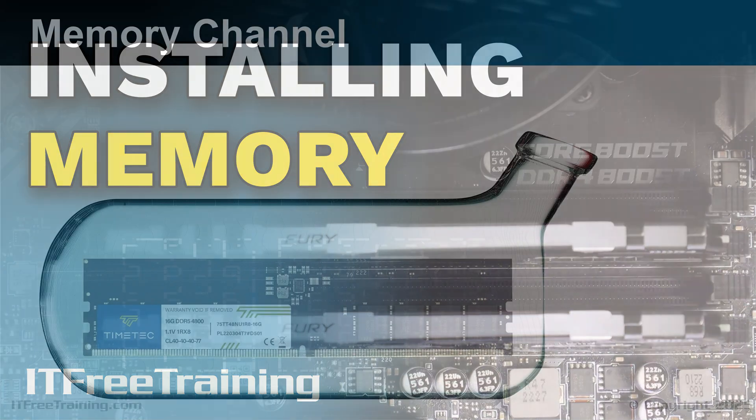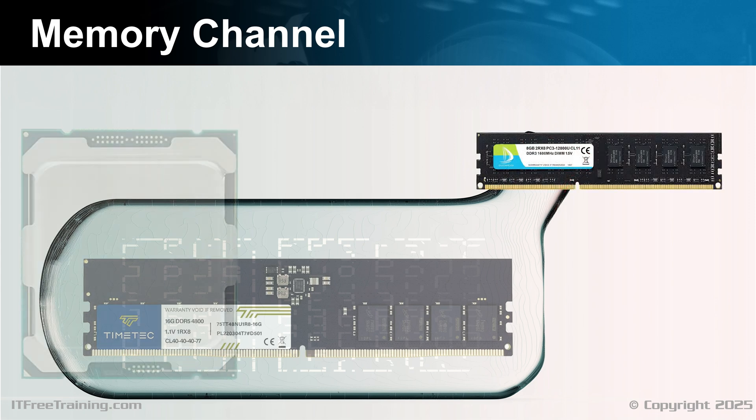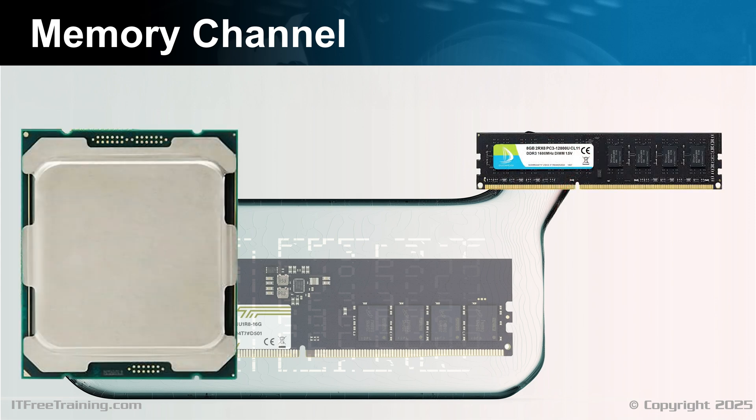Let's have a look at installing memory. In a computer, there is a bus that transfers data from the memory modules to the CPU. In the 2000s, memory speed and CPU speed increased and transferring memory to the CPU started to become a bottleneck. A bottleneck is where one component limits the performance of the rest of the computer. In this case, the memory bus could not transfer data quickly enough to the CPU.